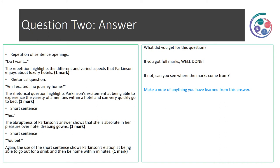Let's have a look at the answer. The first mark comes from the repetition of sentence openings — 'Do I want?' The repetition highlights the different and varied aspects that Parkinson enjoys about luxury hotels. Then we have the rhetorical question: 'Am I excited? No journey home?' The rhetorical question highlights Parkinson's excitement at experiencing the variety of amenities within a hotel and being able to very quickly go to bed. The next mark comes from the short sentence: 'Yes.' The abruptness shows that she is absolute in her pleasure over hotel dressing gowns. And finally, another short sentence: 'You bet.' The use of the short sentence shows Parkinson's elation at being able to go out for a drink and then be home within minutes.